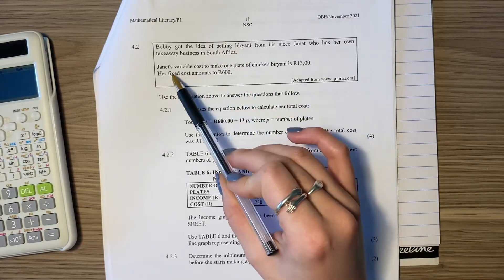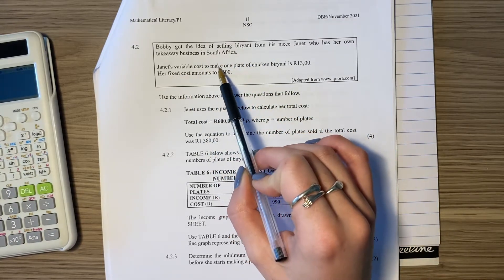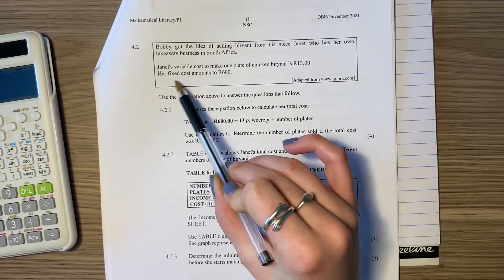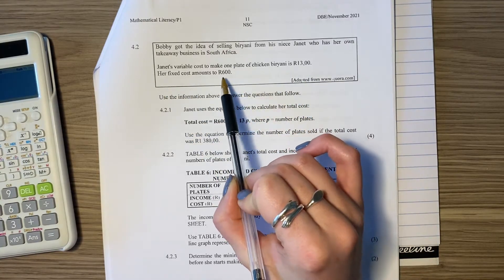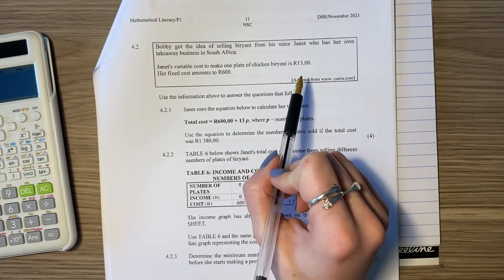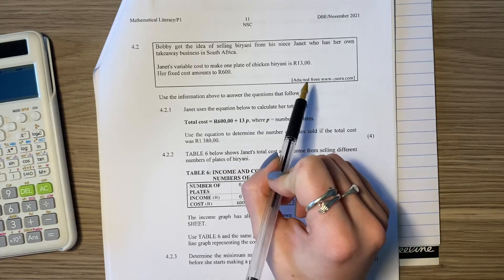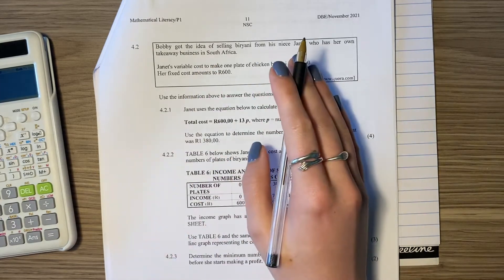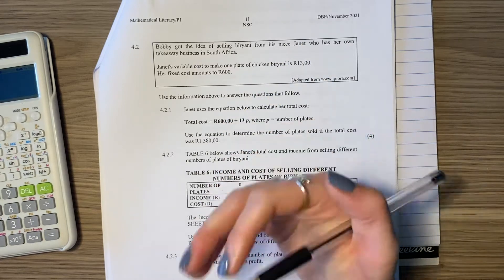Janet's on fire entrepreneur here. Janet's variable cost to make one plate of chicken briyani is 13 rand, and her fixed costs amount to 600 rand. So remember what's the difference between variable and fixed? Variable means it increases by 13 rand every time she sells a briyani. The 600 rand is there regardless if she sells one briyani or not. Fixed costs are like rent.